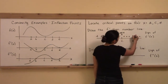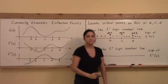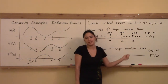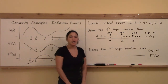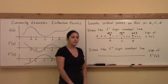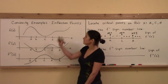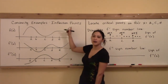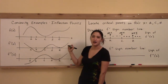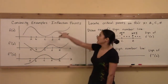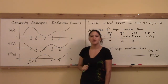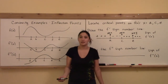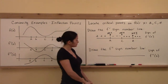Last week I told you that if the sign didn't change, you could write HPI — but that wasn't technically right. I'm not allowed to call a point an inflection point unless the concavity has changed. An inflection point is a point on the graph where the concavity changes. Write that down: an inflection point is a point on the graph where the concavity changes — either from concave up to concave down or vice versa.